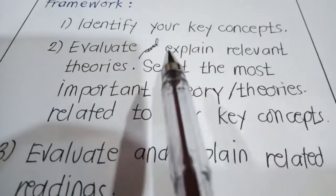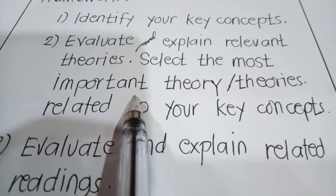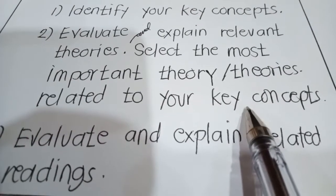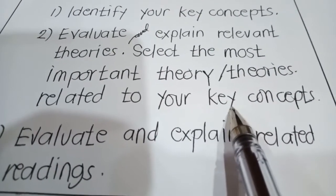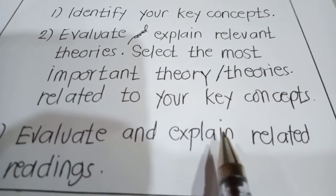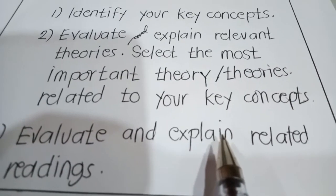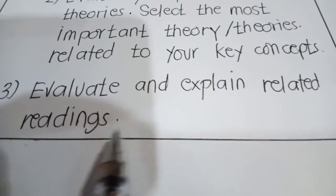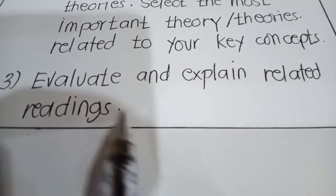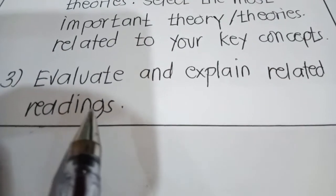Make sure to mention the most important theory related to your key concepts. And if there is a well-established theory or model that you don't want to apply to your own research, then explain why it isn't suitable for your purposes. Finally, the last step in creating a theoretical framework is to evaluate and explain related readings.